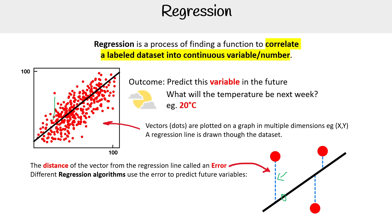There are different regression algorithms that we use to predict future variables. We have mean squared error, root mean squared error, mean absolute error. And so based on the algorithm that you use to draw your line, that's going to change the prediction.